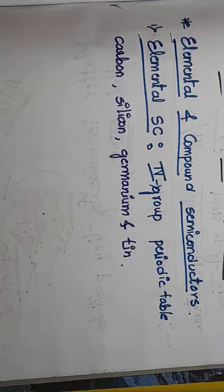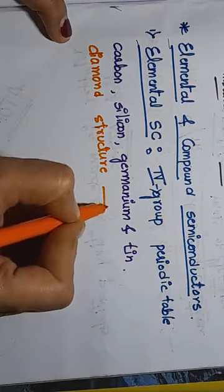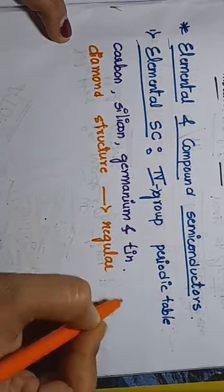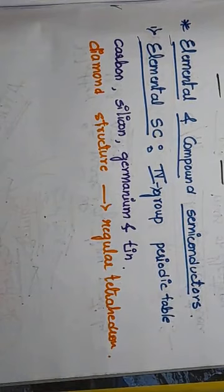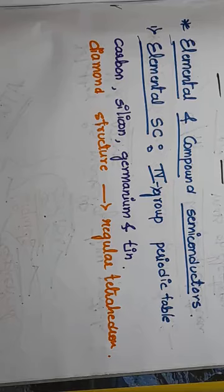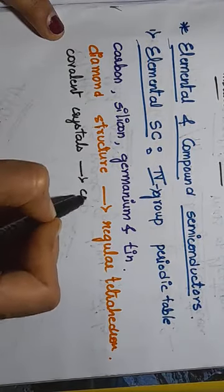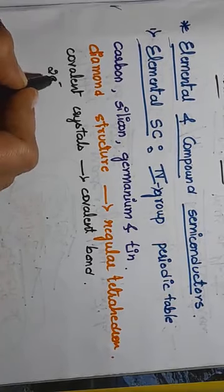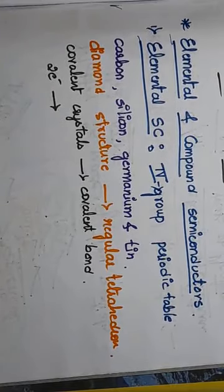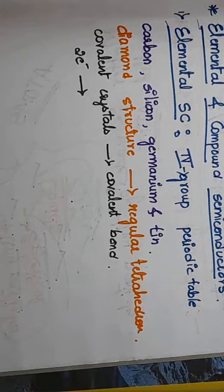All these elemental semiconductors crystallize in a diamond structure and they form a regular tetrahedron. The bonding in these semiconductors is covalent bonding — these are covalent crystals. The atoms are held by covalent bonds, and these bonds consist of two electrons: one electron from one silicon atom and the other electron from another silicon atom, both electrons having different spin so that they can form a bond.